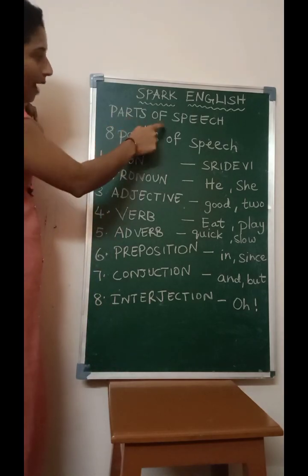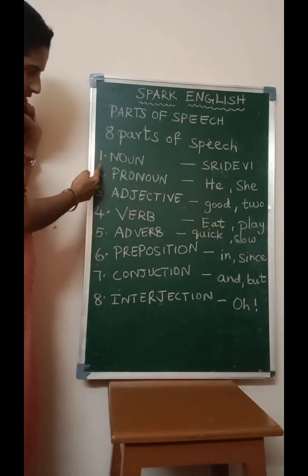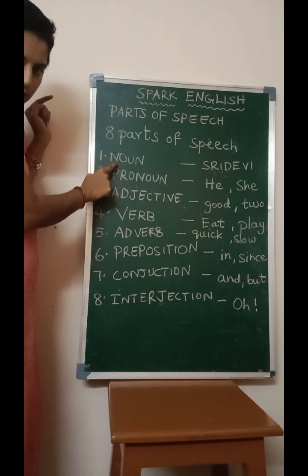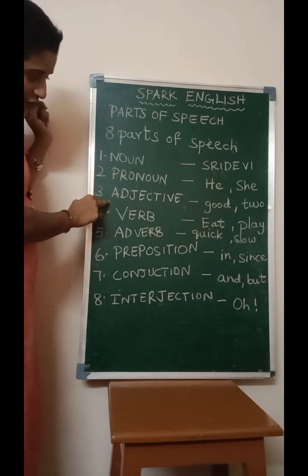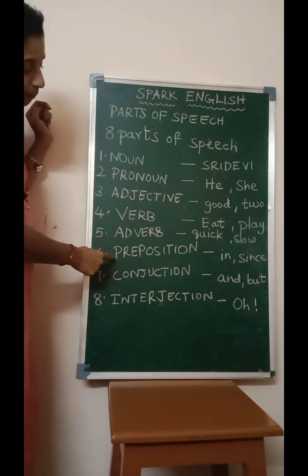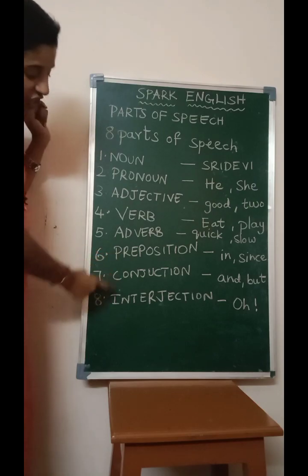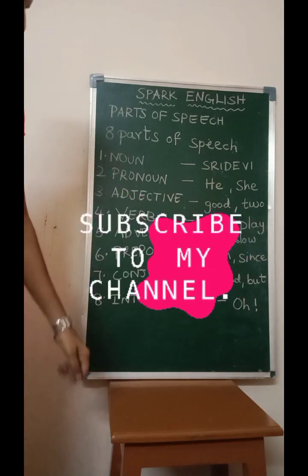So there are eight parts of speech: noun, pronoun, adjective, verb, adverb, preposition, conjunction, and interjection.